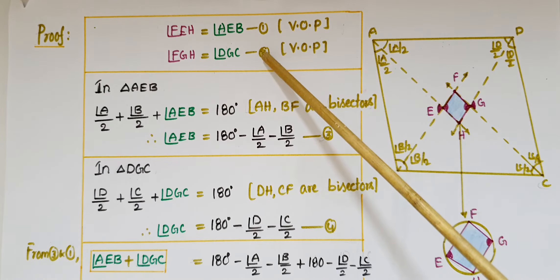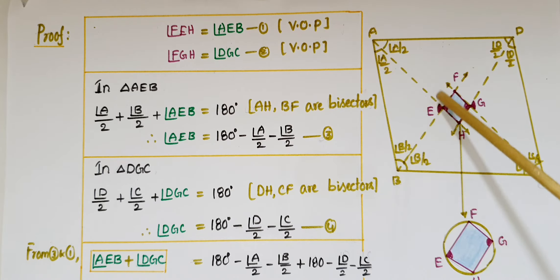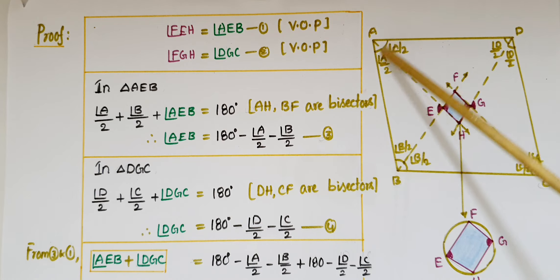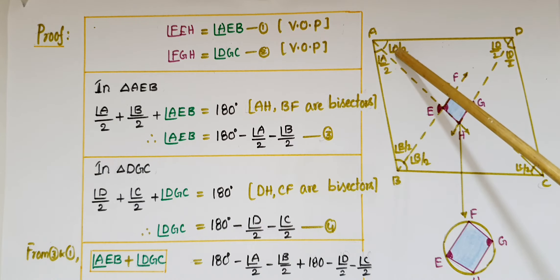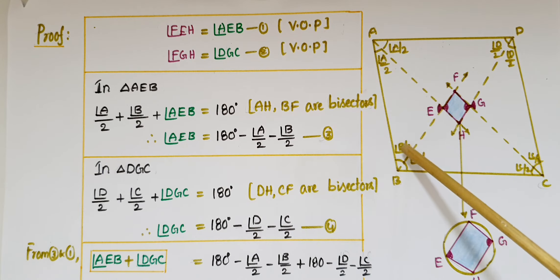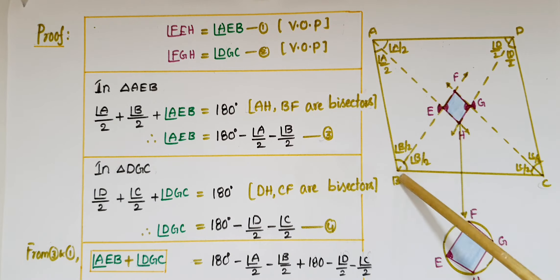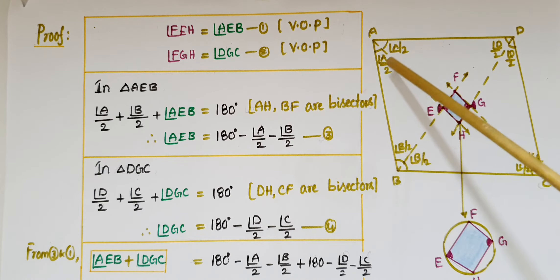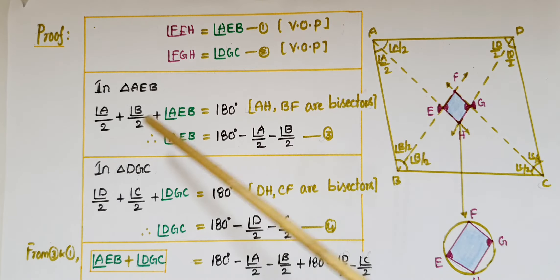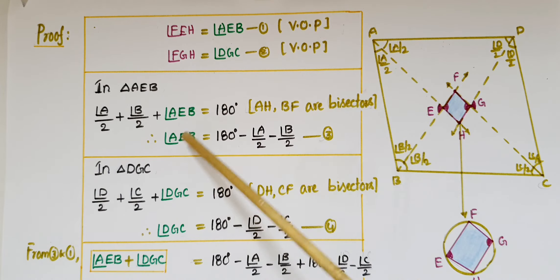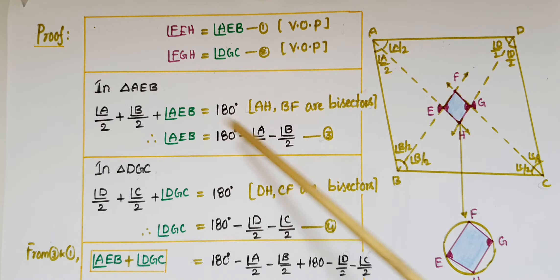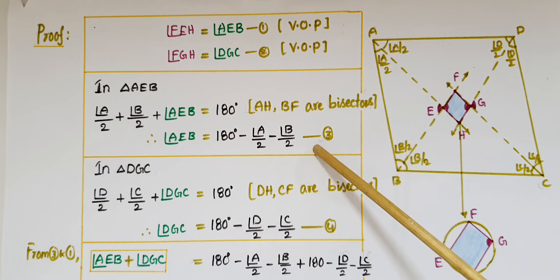In triangle AEB, since this is the bisector of angle A, this angle is A/2 and this is also A/2. Similarly, this is B/2 and this is also B/2. So in triangle AEB: A/2 plus B/2 plus angle AEB equals 180 degrees, because the sum of angles of a triangle is 180 degrees. Therefore, angle AEB equals 180 minus A/2 minus B/2. This is the third equation.